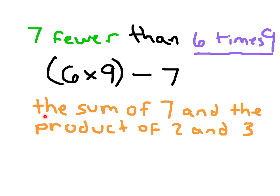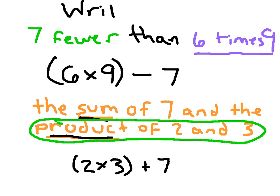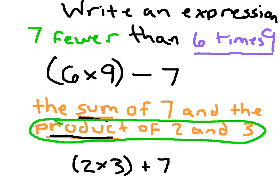Here's another problem: the sum of 7 and the product of 2 and 3. Don't get confused by those vocabulary words — sum means the answer to an addition problem, and product means the answer to a multiplication problem. We'll start with the product of 2 and 3: (2 × 3), put that in parentheses. Then it says the sum of 7 and that product, so we write plus 7. When it says to write an expression, it's not asking you to solve it — it's asking you to write out the expression that describes those words.